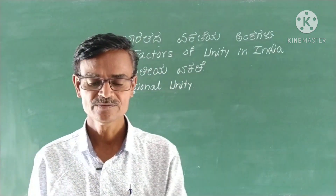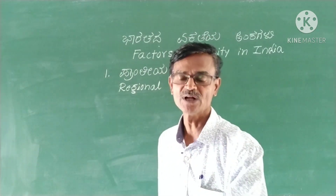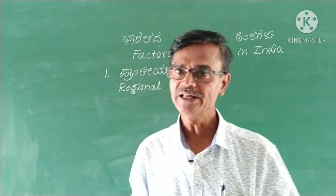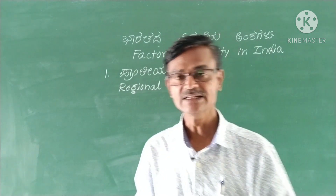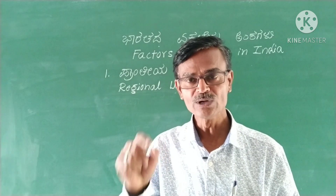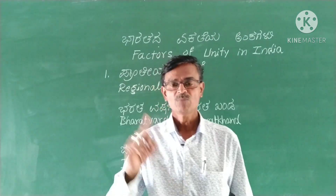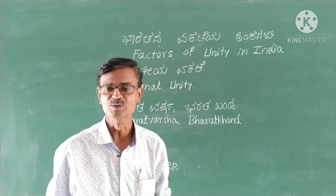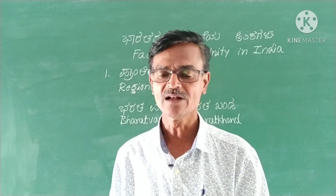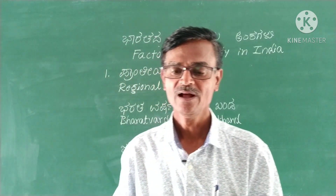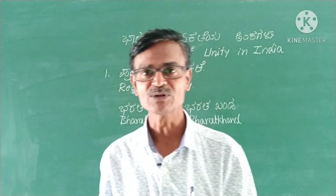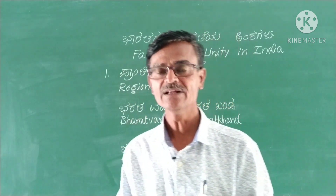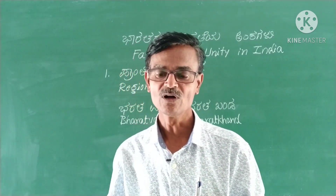Himalayan mountains in the north, Kanyakumari in the south, Brahmaputra river in the east and Indus river in the west. The country located in these regions is known as India. The people who reside here are Indians. India is known as Bharatavarsha. The emperor Bharata ruled this country,